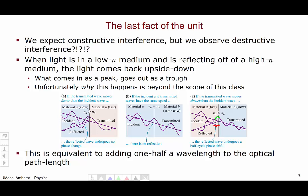Why this happens is beyond the scope of this class, but you can see that if I come in with a peak and go out as a trough, that's effectively adding one-half of a wavelength to the optical path.